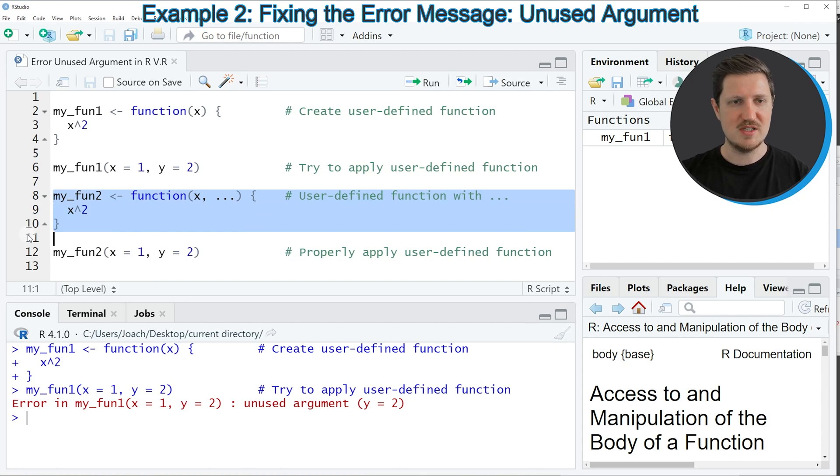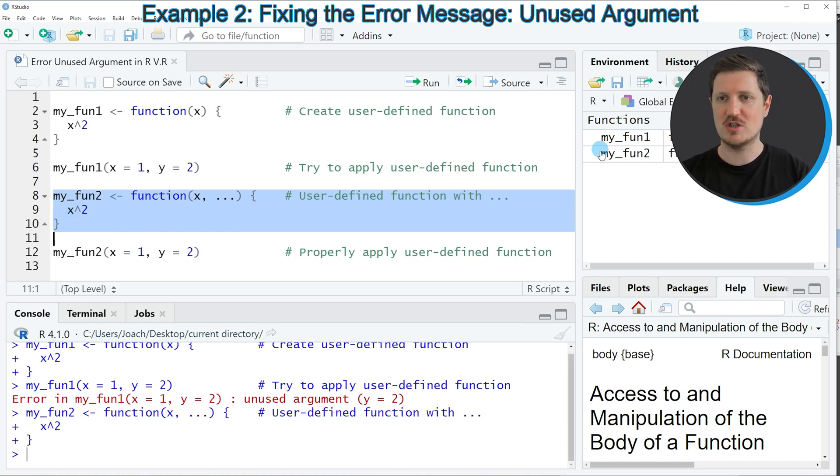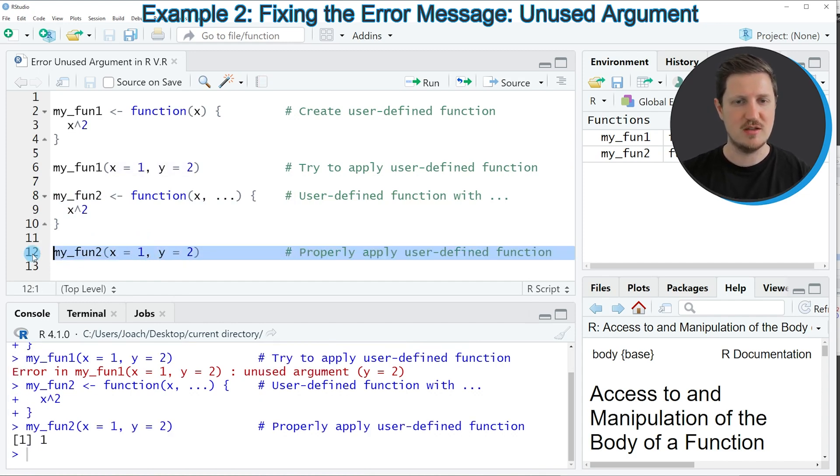If you run these lines of code, you can see at the top right that another function is appearing which is called myfun2. Now we can apply this function as we already tried in the first example to our two input values x and y. As you can see, no error message is returned anymore and the function returns a valid output.